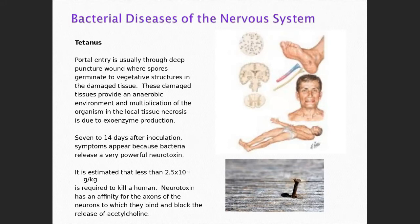Endotoxins, by contrast, are part of the LPS layer of gram-negative organisms — you need a large amount systemically to cause a problem. The tetanus toxin is a neurotoxin. It's estimated that 2.5 times 10 to the negative 9 grams per kilogram is enough to kill a human — not very much at all.